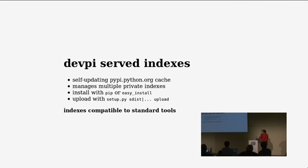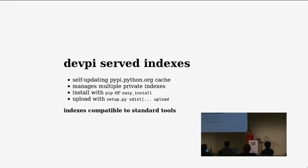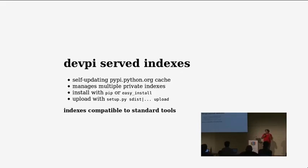DevPI serves indexes. One of the main purposes at the beginning — that was before PyPI Python.org grew a content delivery network — was that you can have a local self-updating PyPI cache. You basically work against your local index. If a package is not there, it goes off to PyPI Python.org, grabs it, and the next time you don't even need to be online. It will satisfy everything completely offline from your local cache.